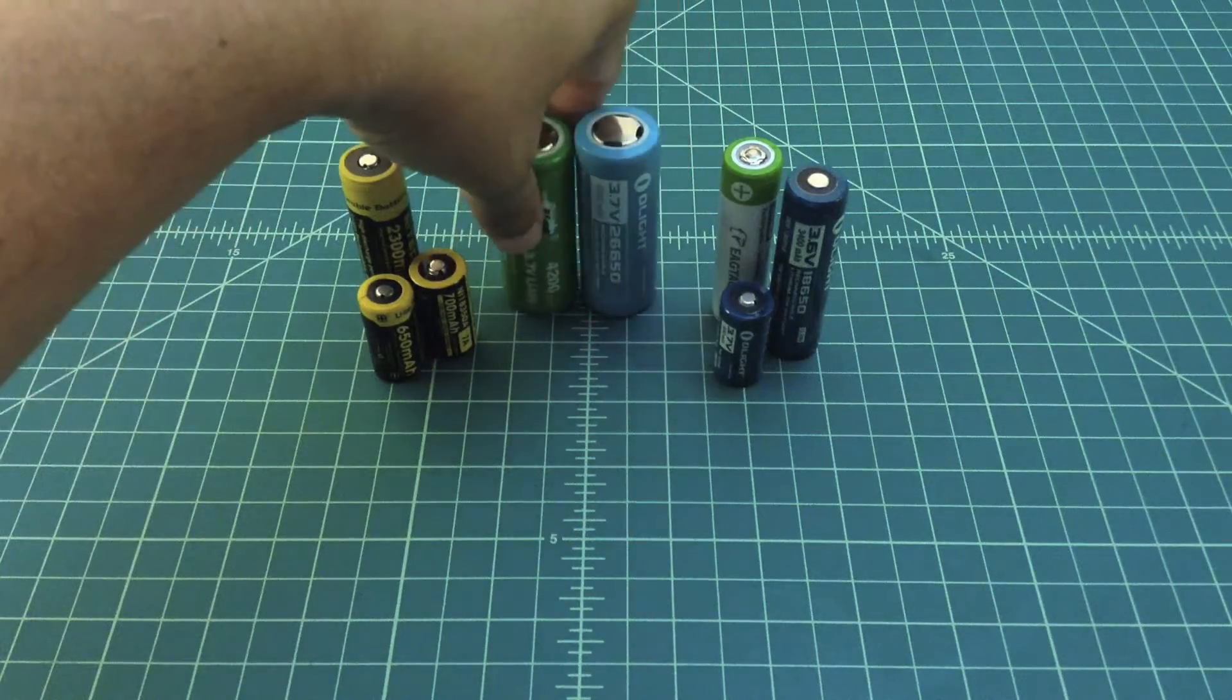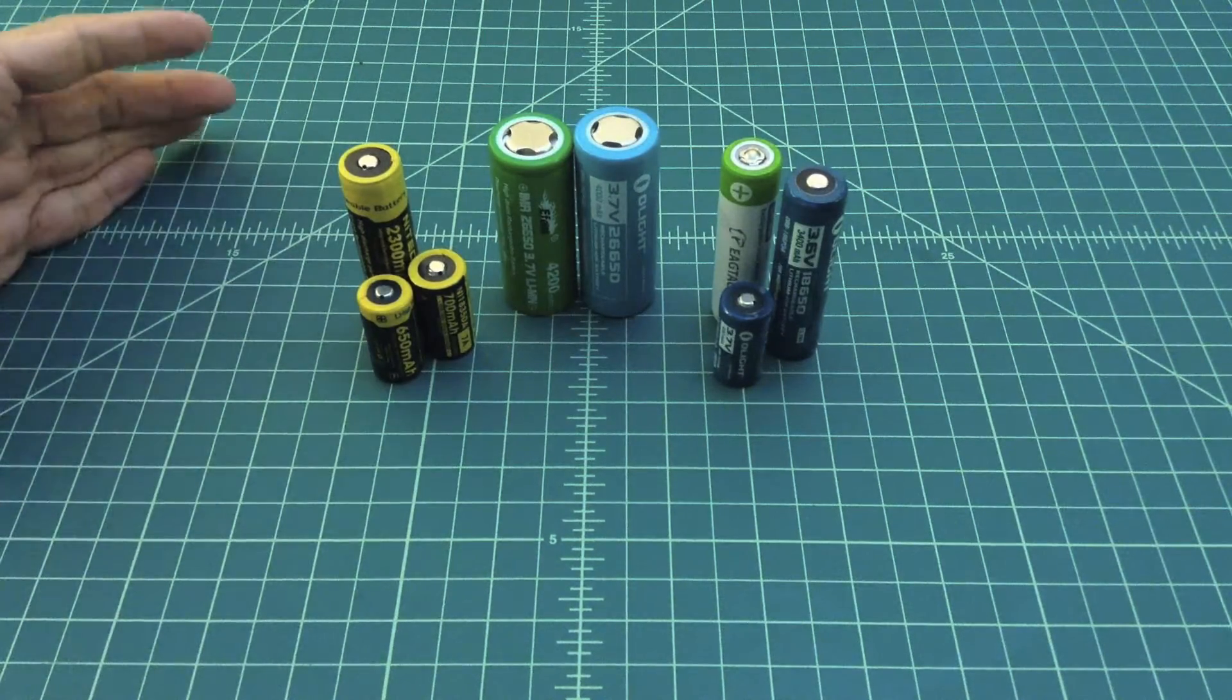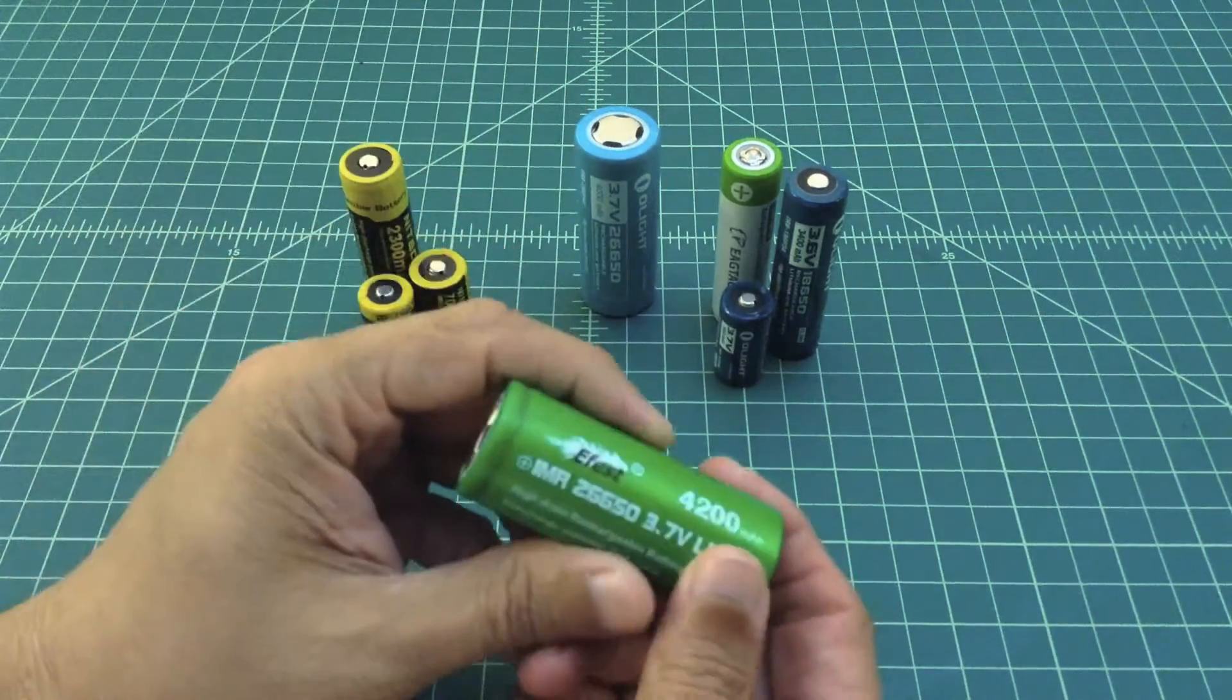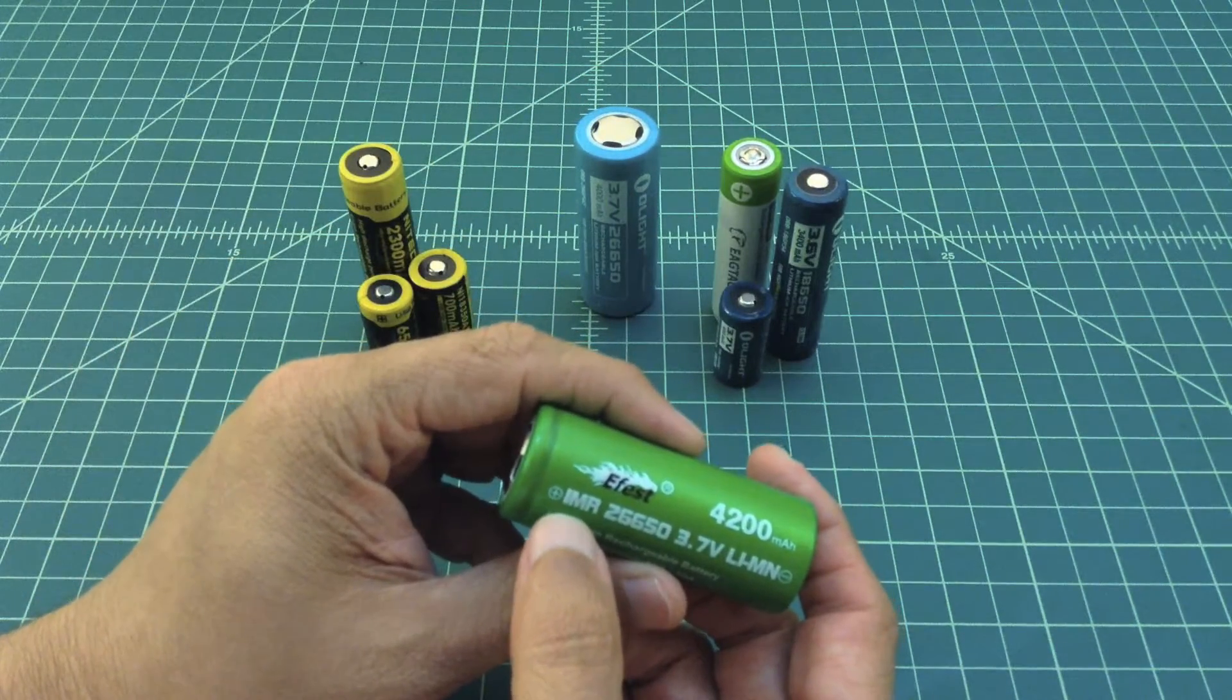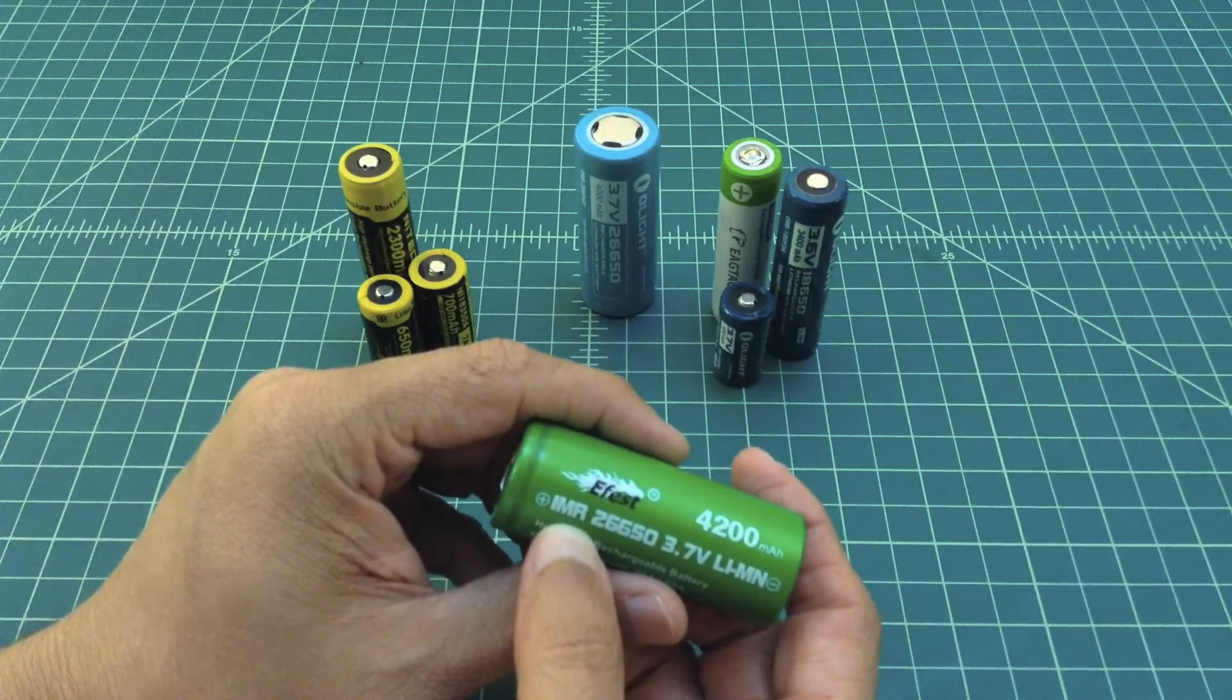The differences between an IMR and an ICR is really around the chemistry that's inside the battery. When you take a look at this battery, it's clearly labeled an IMR—that I is actually an L—and this stands for a lithium manganese rechargeable battery.